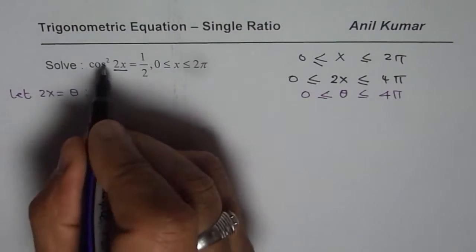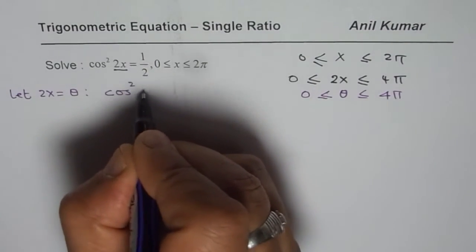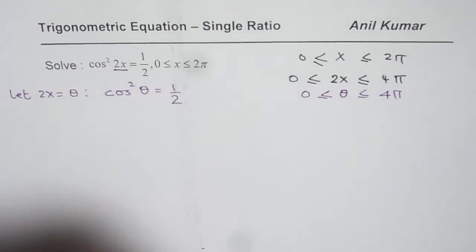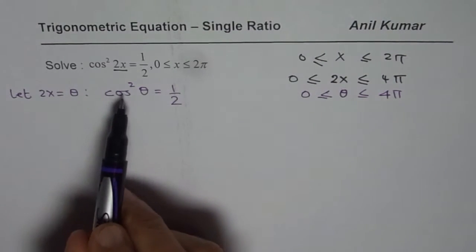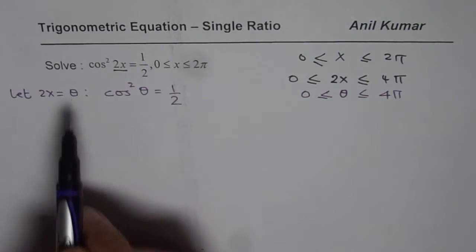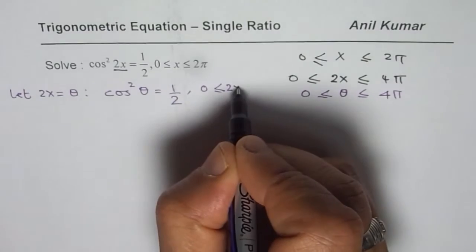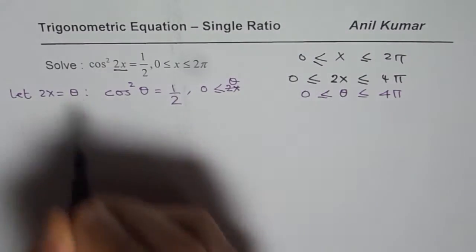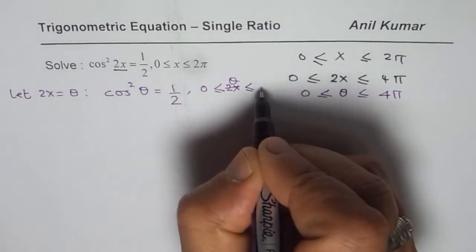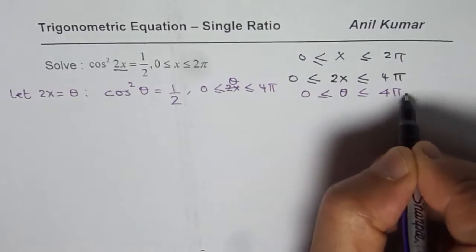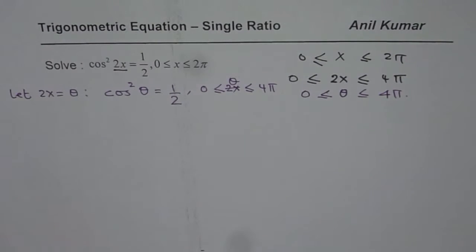Then I am rewriting the question as cos²θ = 1/2. So when I am writing 2x as θ, I have to change this x to 2x, so it becomes θ between 0 to 4π, just as we are writing here. That is a very critical step which at times you may not get. So look at it very carefully and now you can pause the video, solve and get all possible solutions.